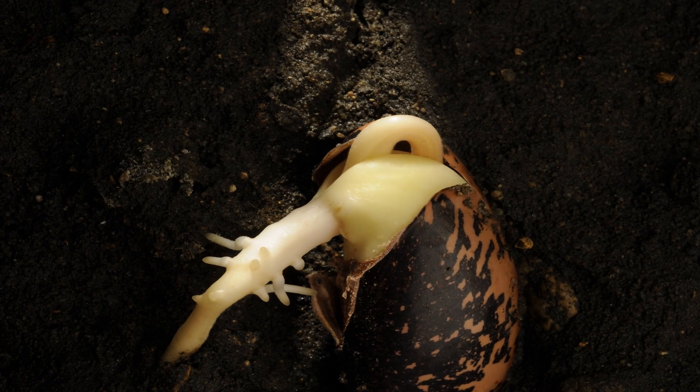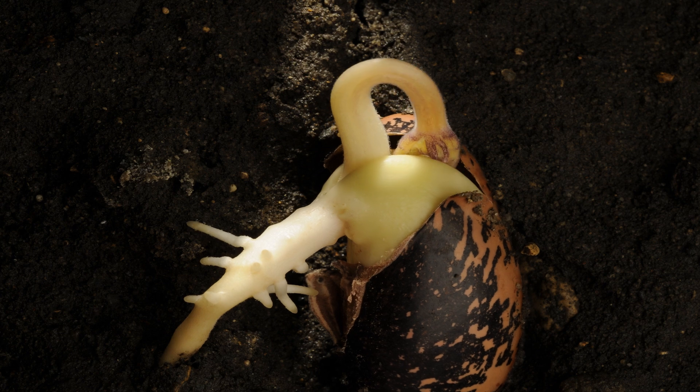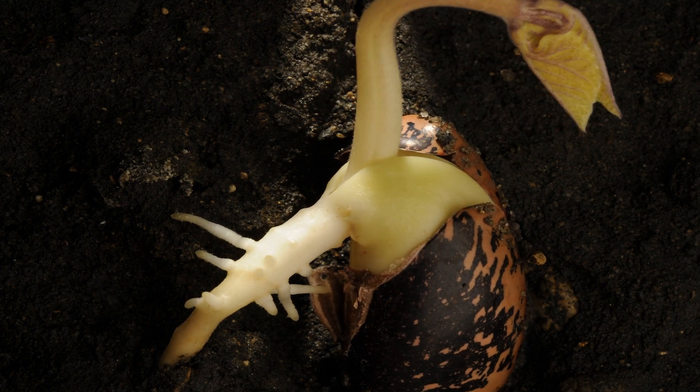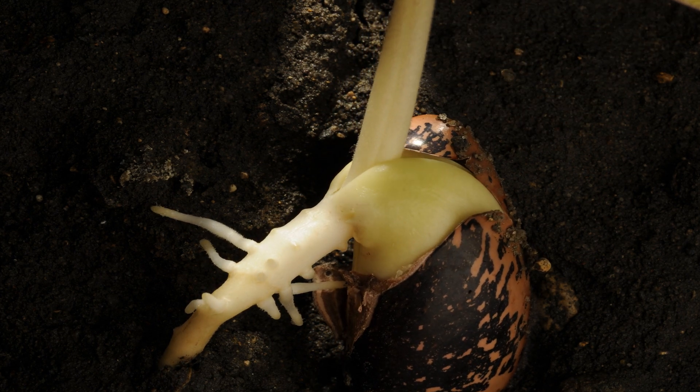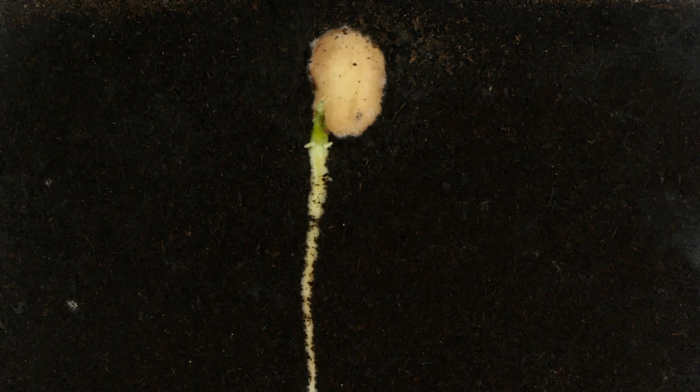Water softens the seed coat, making it easier for the tiny plant inside to break free. Warmth triggers the embryo to wake up and start using the stored food.